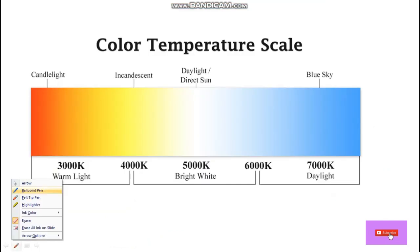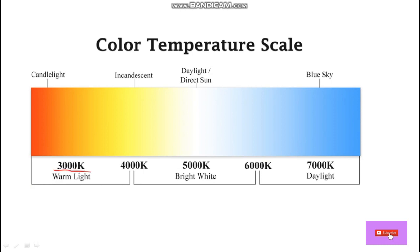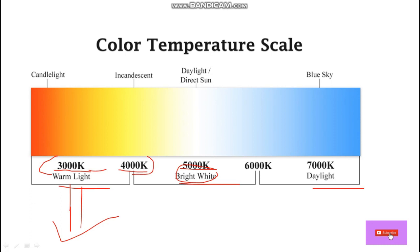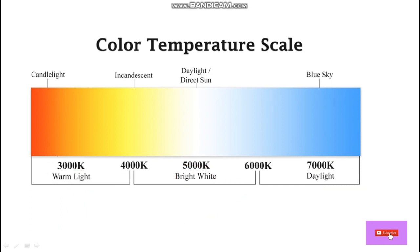Color temperature gives the color of the light according to its value. We have three ranges: warm light at 3,000 to 4,000 K, bright white light at around 5,000 K, and daylight or cool light at 7,000 K. These are the parameters for light color that we need to know before selecting or purchasing a light fixture.